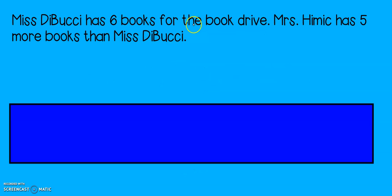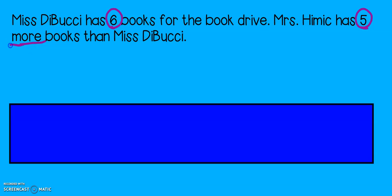This problem has two parts. The first part we can see at the top. The second part I have hidden behind this large blue rectangle. We're going to start with the first part and then I will reveal the second part. It says, Miss Debussy has six books for the book drive. Mrs. Himmick has five more books than Miss Debussy. So if she has more books, do you think we should add her books or subtract her books? Let's add them.